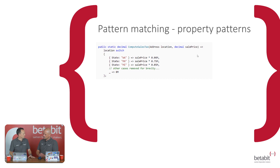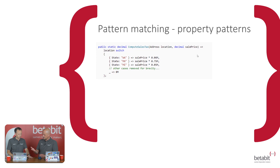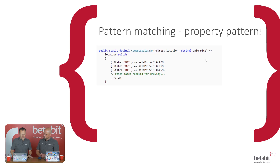Next is property matching. Can you see what this does? Looking at it, it's a method to compute the sales tax based on the state that's in the address location. Exactly — it calculates the sales price. If you open the bracket, Visual Studio will actually help you with IntelliSense to say which properties are in there. And you just match the state on WA, and pick that one. This is awesome — more pattern matching.